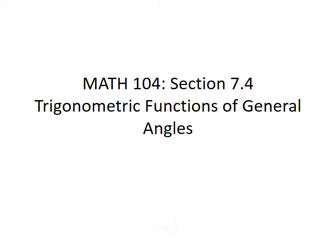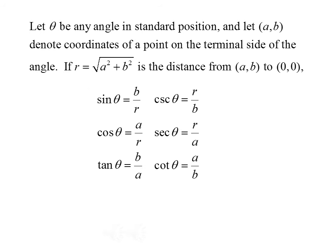In this lecture, we'll talk about trigonometric functions of general angles. To start with, let theta be any angle in standard position, and let (a, b) denote the coordinates of a point on the terminal side of the angle. If r is defined to be the square root of a squared plus b squared, and is the distance from (a, b) to the origin, then we can define our trig functions as follows.